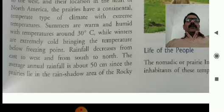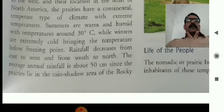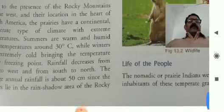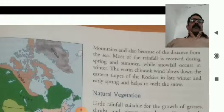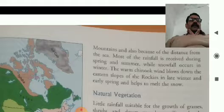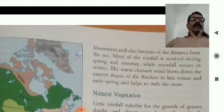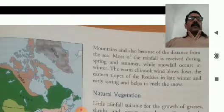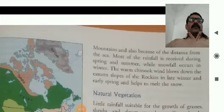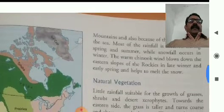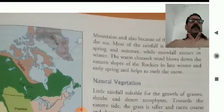The average annual rainfall is about 50 cm, since the prairies lie in the rain shadow area of the Rocky Mountains and also because of the distance from the sea. Most of the rainfall is received during spring and summer, while snowfall occurs in winter. The warm Chinook wind blows down the eastern slopes of the Rockies in late winter and early spring and helps to melt the snow.